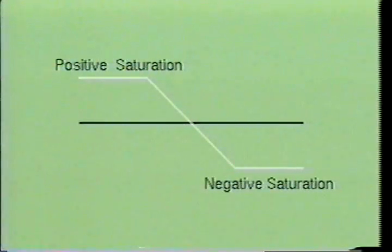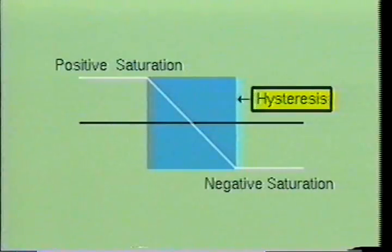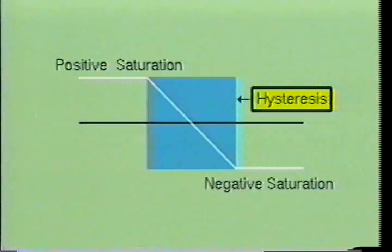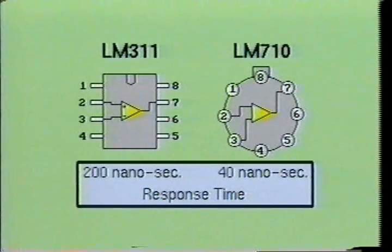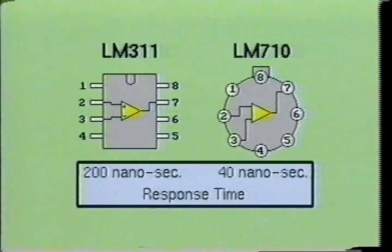The performance of a comparator circuit can be judged by the amount of time it takes for the device to switch from one saturation point to the other. Even though positive feedback made the operational amplifier's output switch at a faster rate, the transition time is much too slow for many applications — it can typically be several microseconds. For faster switching times, special op-amps are designed specifically for fast comparator applications. The LM710 has a switching time of only 40 nanoseconds, and the LM311 has a switching time of approximately 200 nanoseconds.